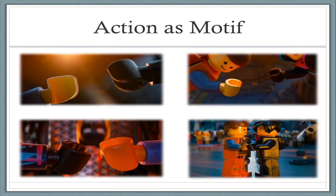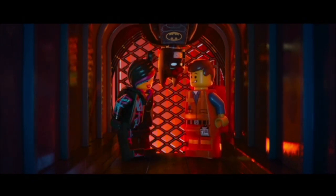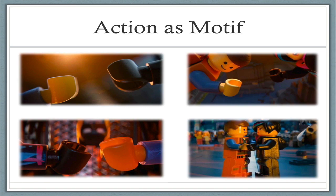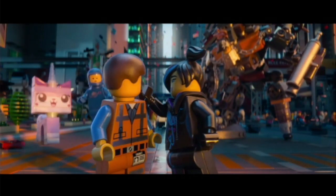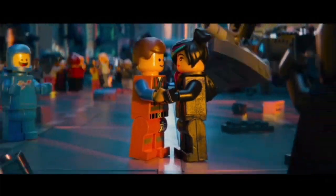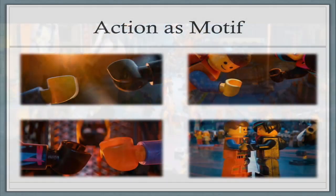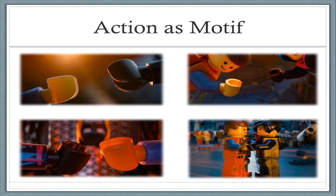We can also have an action as a motif. One of the best and most obvious examples is from The Lego Movie. Throughout the movie, Emmett, our main character, continues to try to reach out and hold hands with Wildstyle, the girl he meets on his journey. Every single time they get very, very close — they can almost reach out and touch — but they are thwarted by something and never get to hold hands. Finally, by the end of the film, Emmett and Wildstyle are able to hold hands and begin their new relationship together. It is an action that is repeated: the idea of reaching out and holding hands.